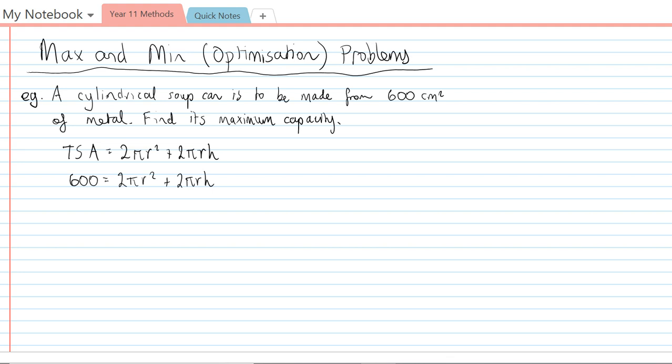I could simplify it a bit by dividing everything by 2. So 300 = πr² + πrh. The other equation that I need to use is the volume, and the volume of a cylinder is given by πr²h.